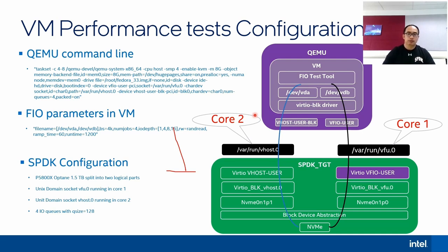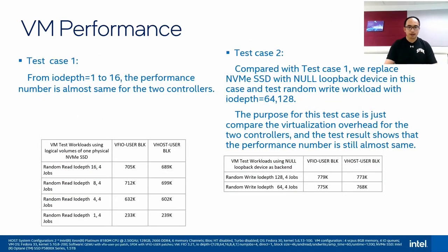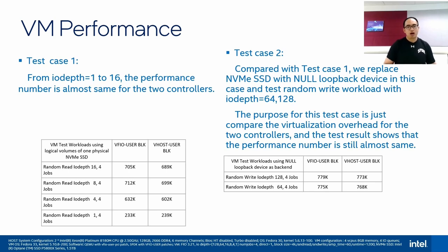The packed ring feature is enabled. We run FIO inside the VM with varying I/O queue depths from 1 to 16. This is test case 1: it shows results for the above configuration in the VM and in SPDK. From queue depth 1 to 16, the performance numbers are almost the same for both solutions. We know from previous slides that two additional pollers are used in the VFR user solution, but from the performance numbers of test case 1, we don't see any impact from those two pollers.